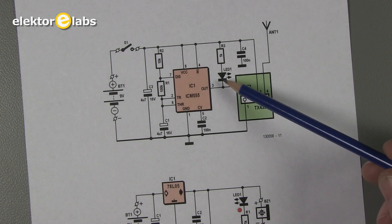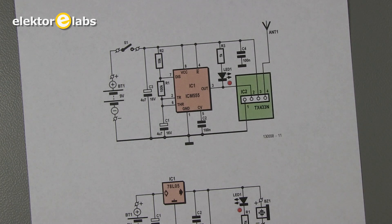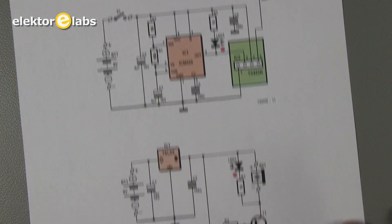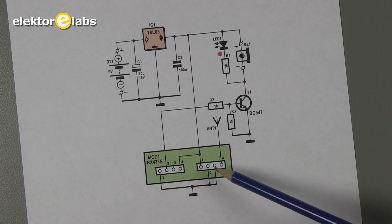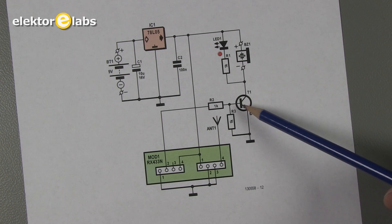An LED flashes when the transmitter is activated. The design of the receiver circuit is just as simple as the transmitter, comprising mainly of the receiver module with a switching transistor and a voltage regulator.